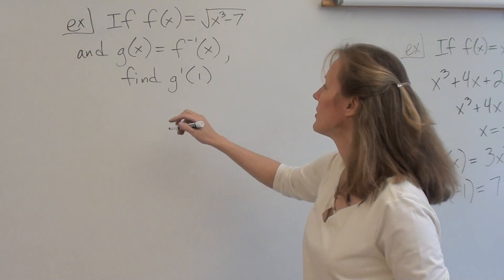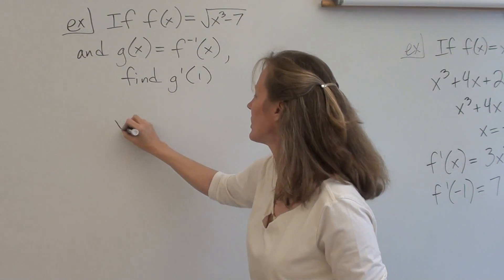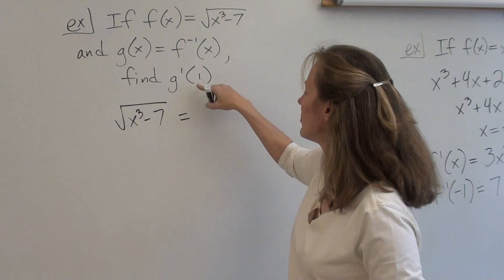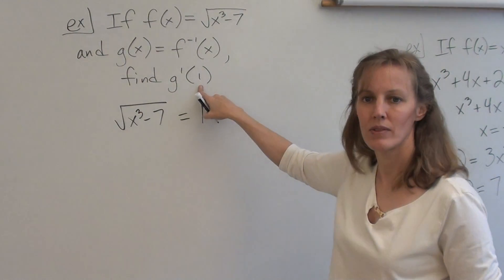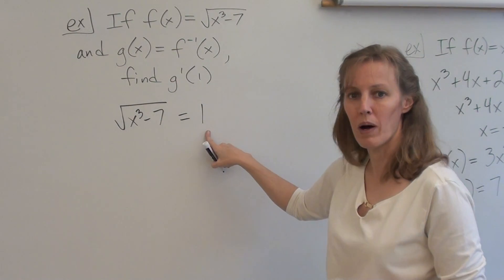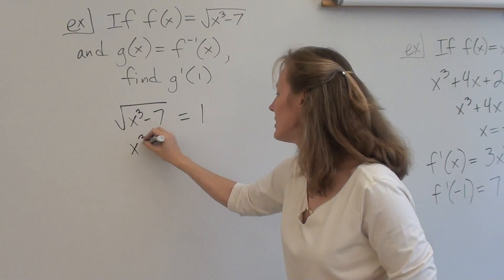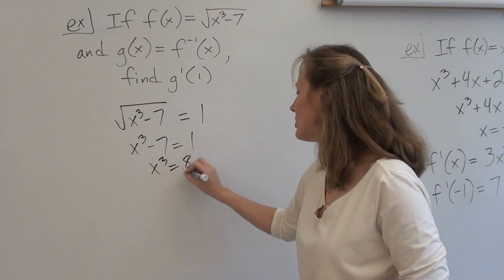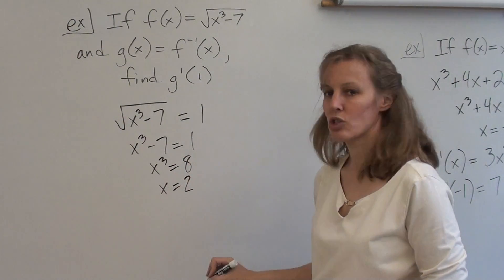So what first thing we have to do is set our function equal to the value where we want the derivative. So we set the function equal to 1, we can square both sides if that makes it easier, solve, and in this case you can easily solve, you just get x equals 2.